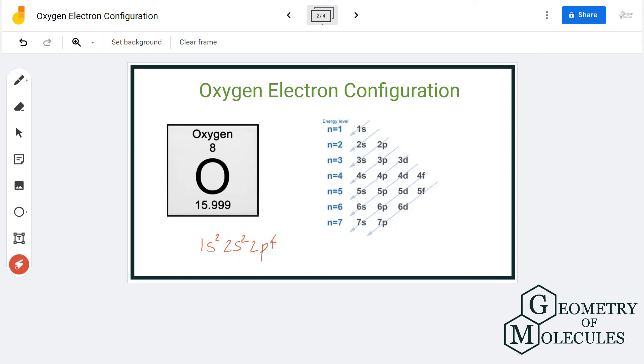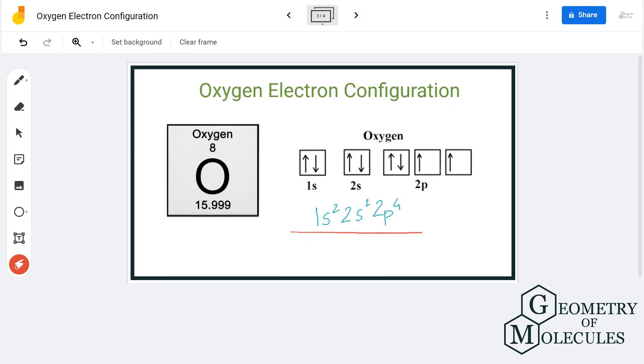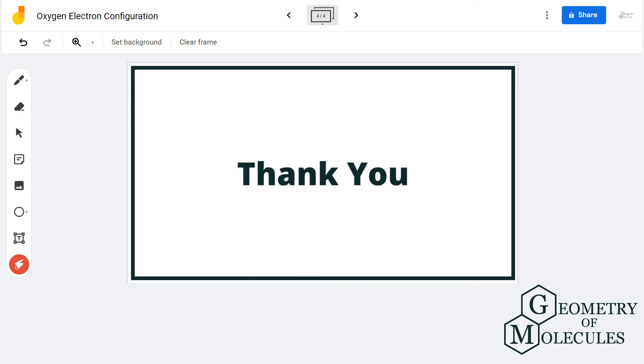So the electron configuration for oxygen atom is 1s² 2s² 2p⁴. I hope this video helps you to understand the electron configuration of oxygen atom. For more videos on Lewis structure, molecular geometry, hybridization, and polarity of molecules, make sure to subscribe to our channel. Thank you for watching.